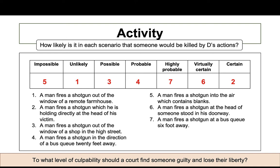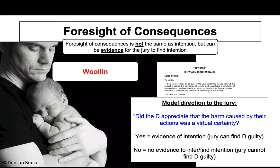In Woollen, the court settled on 'virtually certain' as the test for foresight of consequences. The judge does not generally want to interfere with the jury and give directions if it can be helped — they want to leave the jury to make the decision.